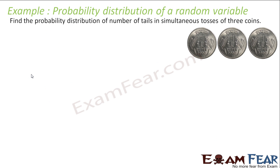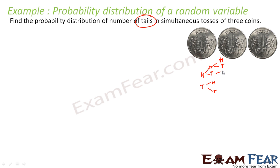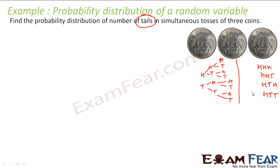Let's take another example. Find the probability distribution of the number of tails in a toss of three coins. If you toss three coins, in the first you may get head or tail, in the second head or tail, in the third also head or tail. So the possible outcomes are: HHH, HHT, HTH, HTT, THH, THT, TTH, TTT — eight possible options.